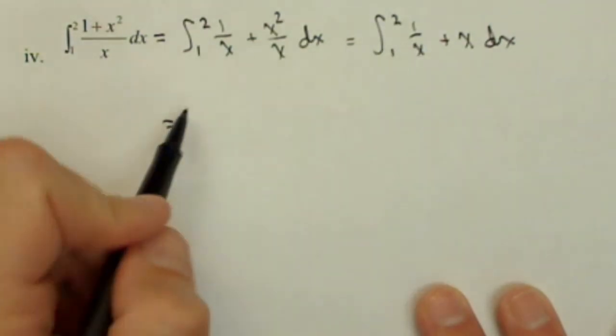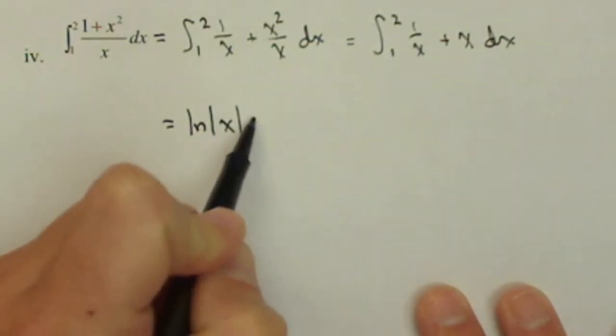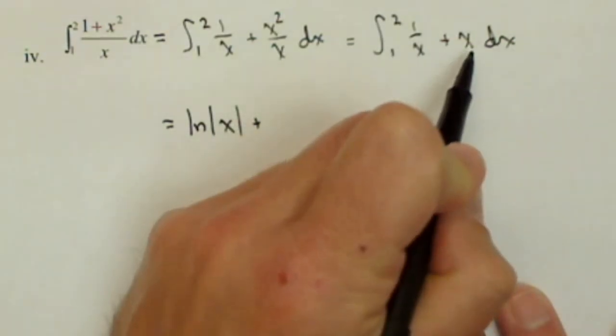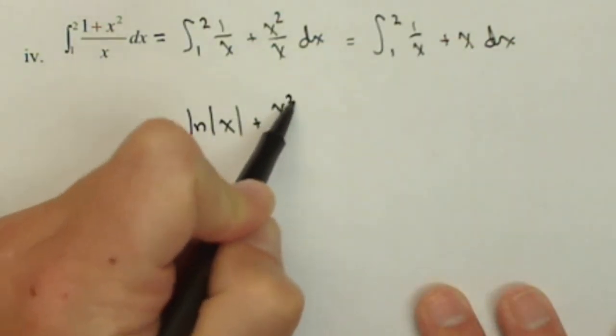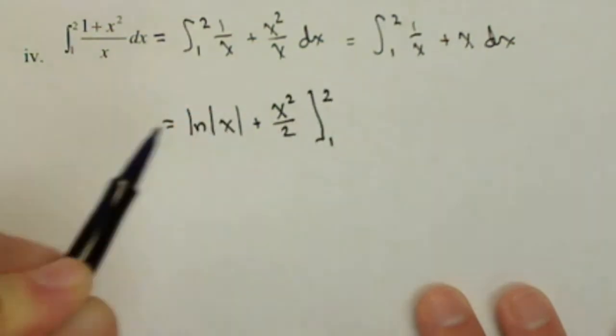Now let's find the antiderivative. The antiderivative of one over x is ln of the absolute value of x, and the antiderivative of x is x squared over two, from one to two.